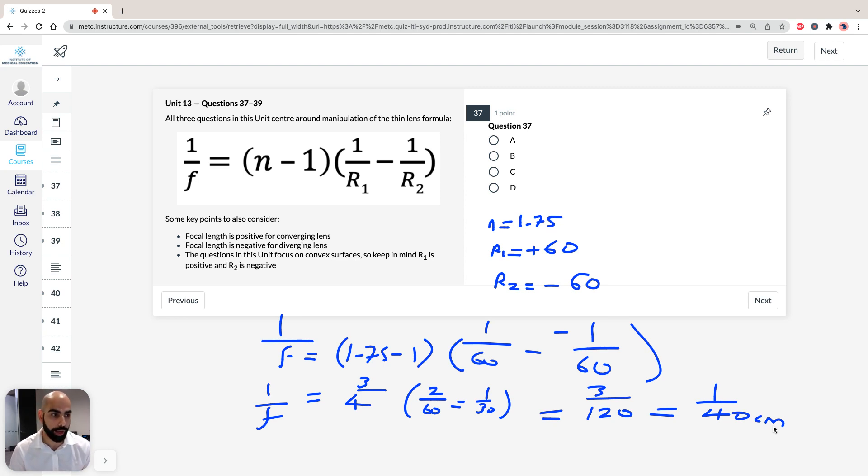Now I also omitted the units from here, but you should for practice, please, I'm very pedantic here, keep the units from practice so that you can not make a mistake in the future if units are important. But I omitted them here for brevity. So that's the answer for 37, it's going to be B, 40 centimeters.